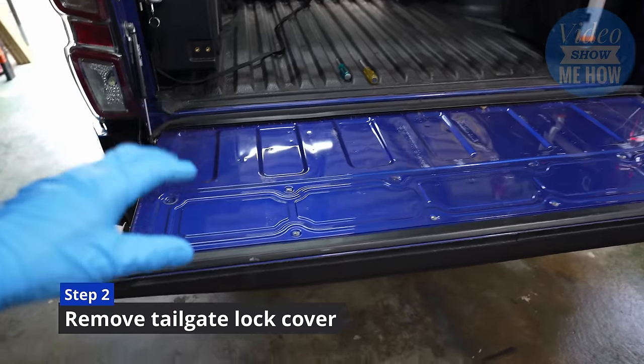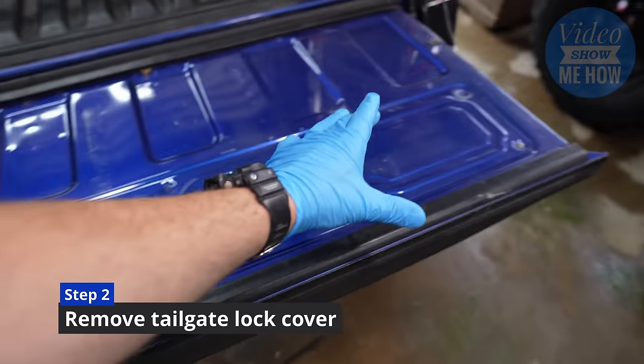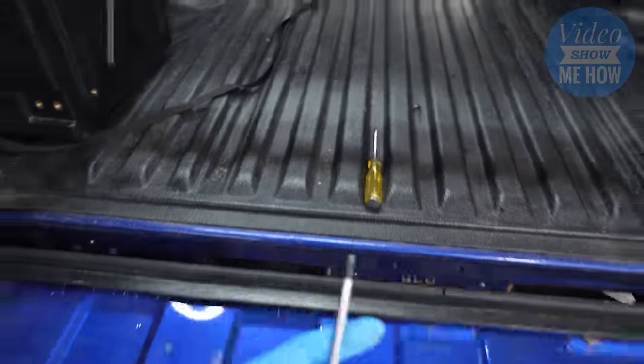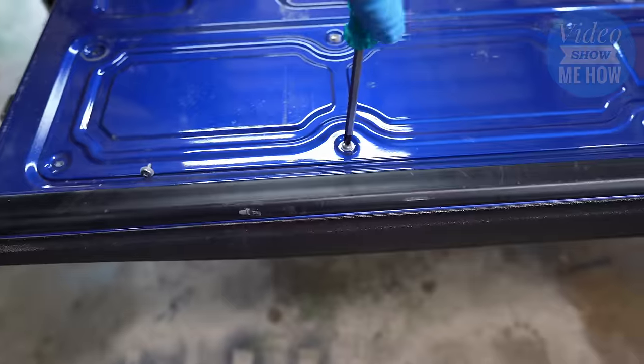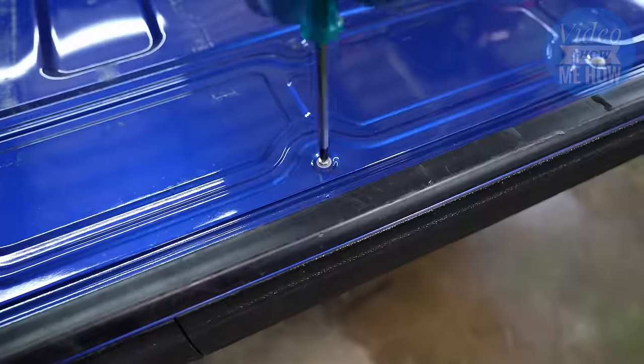And the next step, once we've got the cover out of the way, is to get this guy off. There are a total of 12 little screws. You just need your Phillips head again and remove each of those.